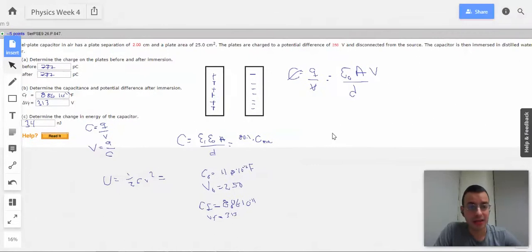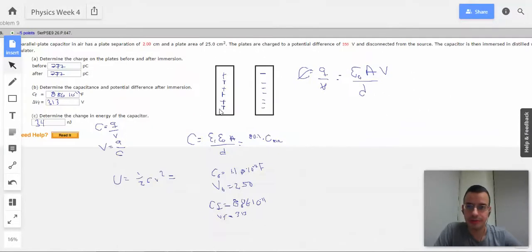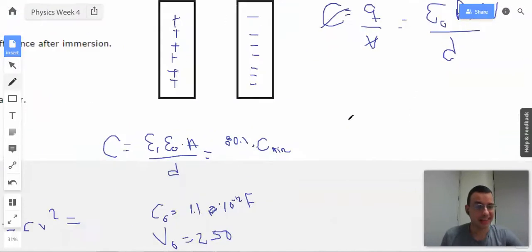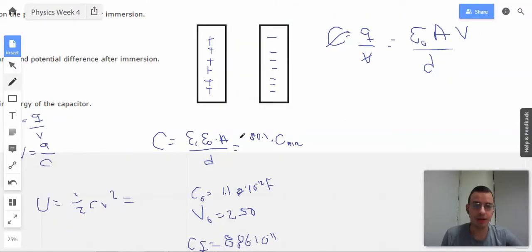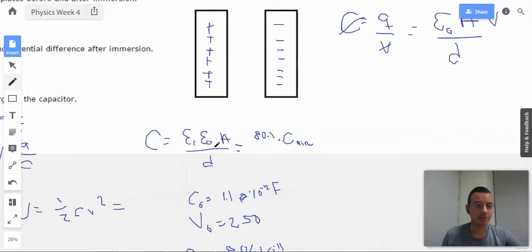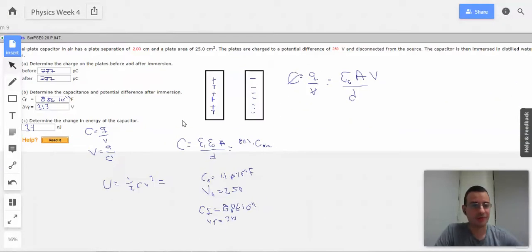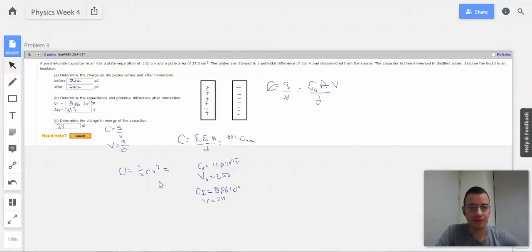So that's how you do dielectrics. All the time before when I've been using epsilon naught, what I've really been meaning was epsilon naught times epsilon R, where there's a specific epsilon R for everything. Air is about 1, vacuum is 1, and everything else you probably have to look up. Sound good? That's it for this week. See you next week.